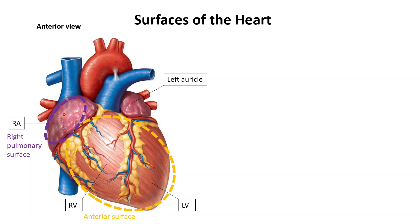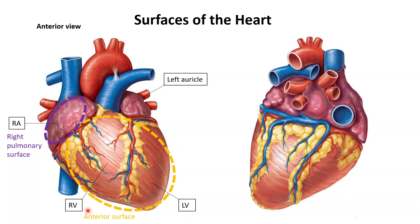These are the only two surfaces visible in an anterior view of the heart. In order to see the remaining surfaces, we would have to go below the heart and look at it from underneath — so imagine standing on the diaphragm and looking up at the heart.